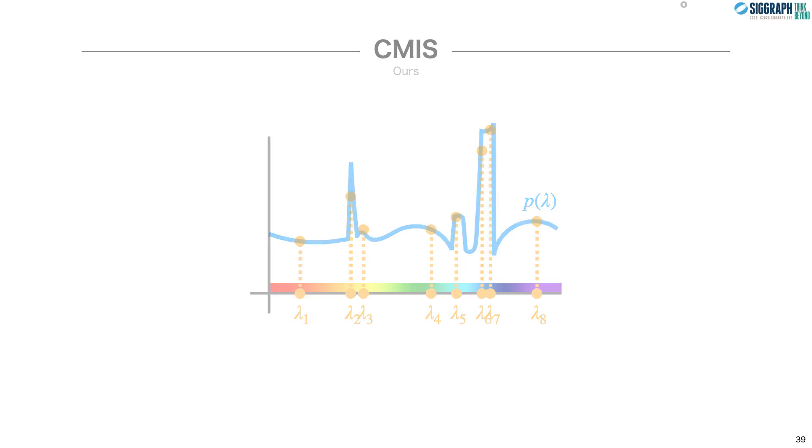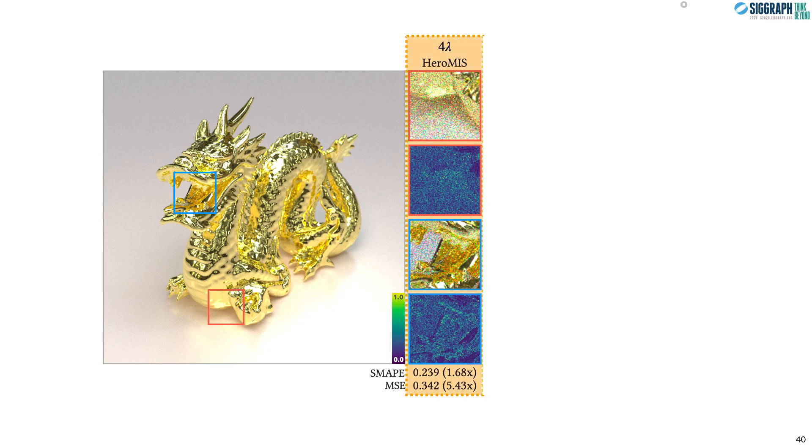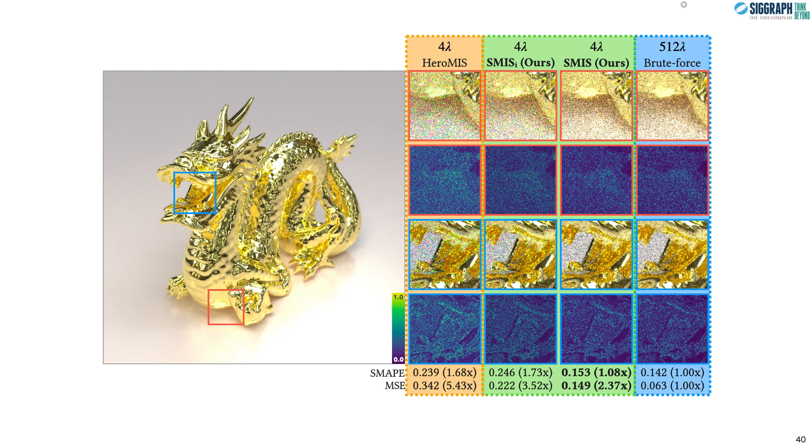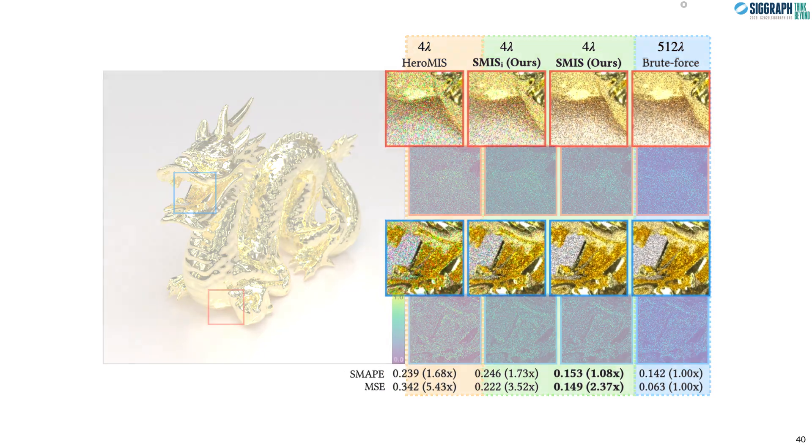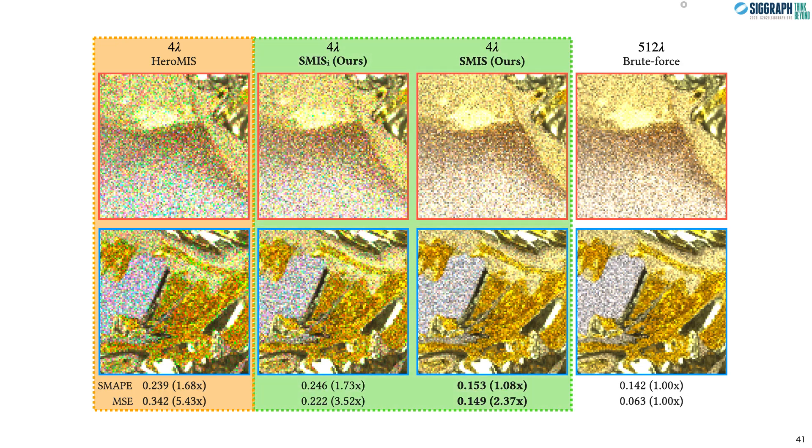Let's look at how these perform in practice. Here we have a simple scene with a gold dragon lit by a fluorescent light. And we'll compare the estimation error of four different methods: HeroMIS, our stochastic MIS using independently sampled wavelengths, our stochastic MIS but using a stratified sampler, and a brute force method. All methods use the same number of paths and four wavelengths per path, with the exception of the brute force method, which uses 512 wavelengths per path to provide a ground truth on color noise. Zooming in, as the fluorescent light has a spiky power distribution, the scene is challenging for HeroMIS and there is quite a bit of color noise present. In contrast, our two SMIS estimators show reduced color noise, with the stratified version on the right being almost visually indistinguishable from the brute force method.